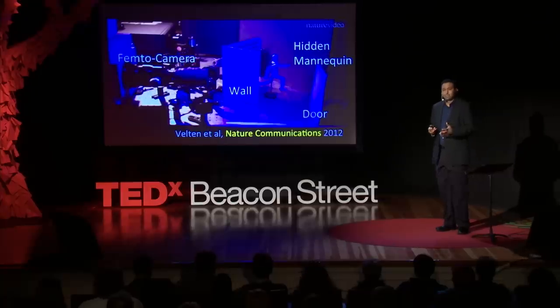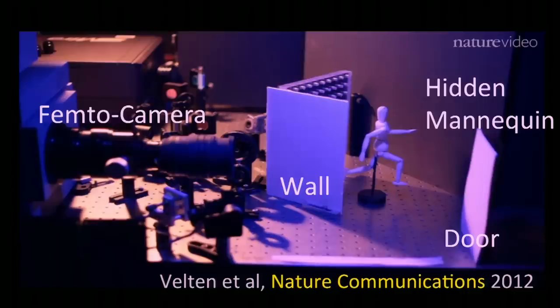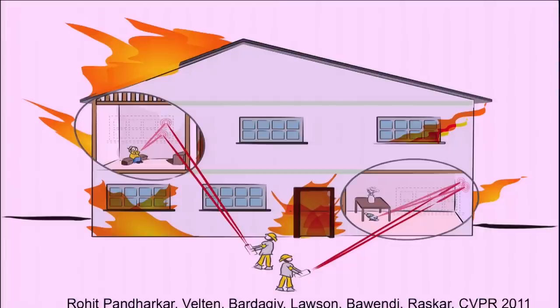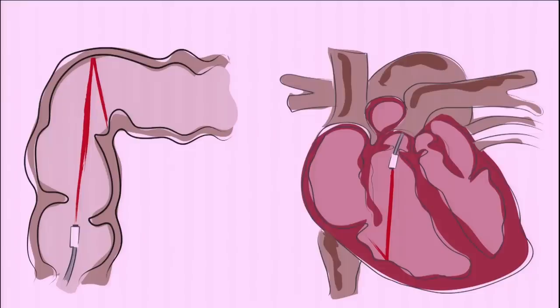And this is not just science fiction. We have built this in our lab using ultra-fast imaging equipment on a tabletop setup. Now, it's going to take us some time to take this outside the lab, but in the future, we might be able to create car cameras that can avoid collision of what's around the bend. Or we might be able to look for survivors in hazardous conditions by sending beams of light through open windows and doors, and create endoscopes that can see deep inside the body, well beyond the reach of today's cameras.